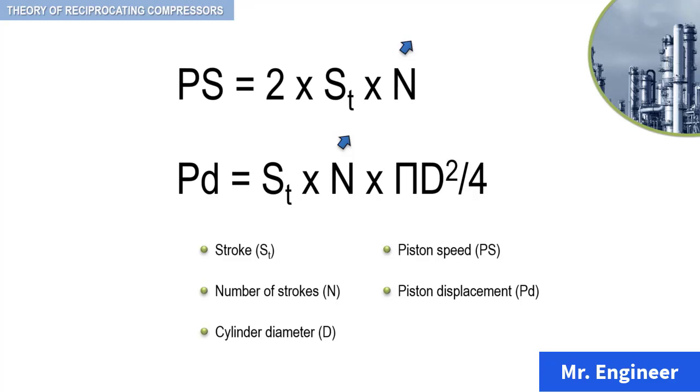If, however, diameter alone or both diameter and speed are increased, the net result can be a lower piston speed.